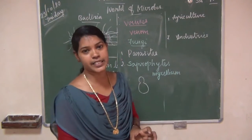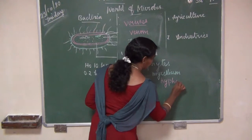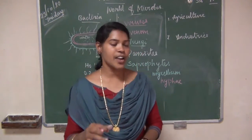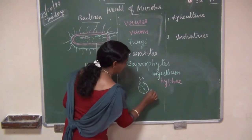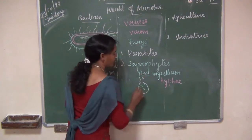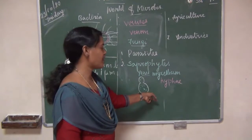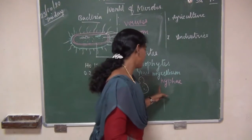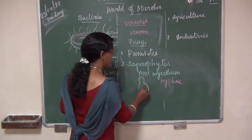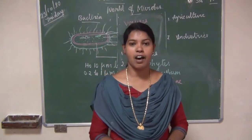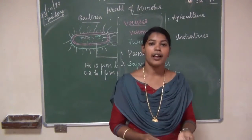Mycelium is a complex structure. Each unit is called a hypha. Each hypha is a tubular structure filled with protoplasm. Inside the protoplasm, cellular organelles and nucleus are present — including mitochondria, Golgi complex, endoplasmic reticulum, and ribosomes. Example: yeast.